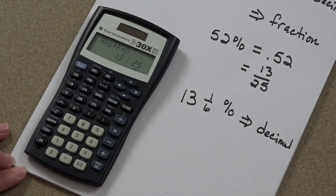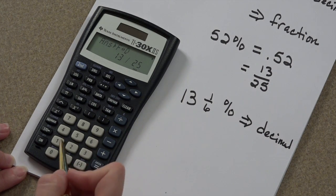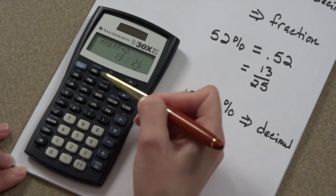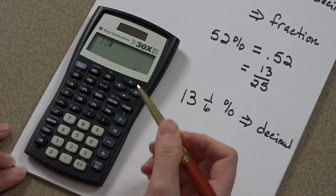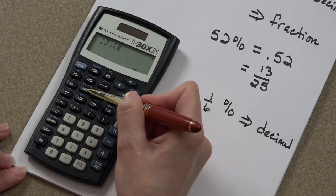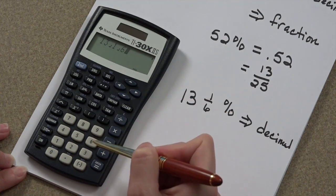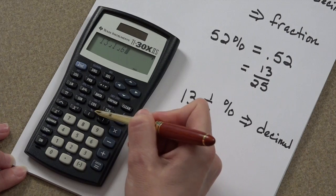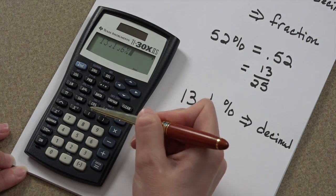Use the same procedure. Only this time, we'll need the help of our fraction key. 13, fraction button, 1, fraction button, 1, 6, percent key. Second and percent.